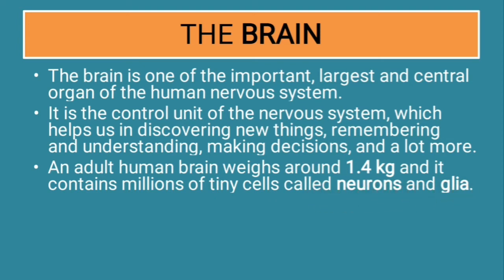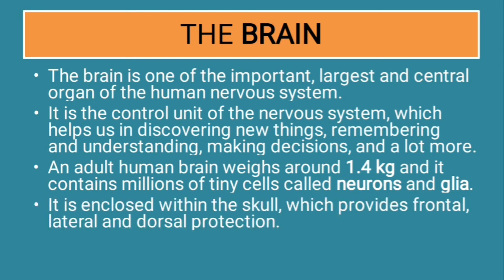The neurons and glia are very small, not visible through our eyes. These cells — neurons and glia — comprise the human brain, and our brain weighs around 1.4 kg. It is enclosed within the skull, which provides frontal, lateral, and dorsal protection.